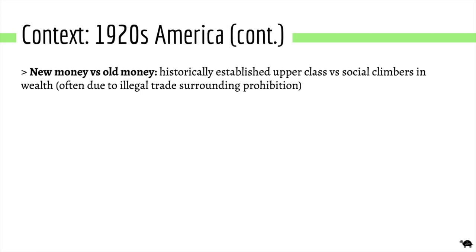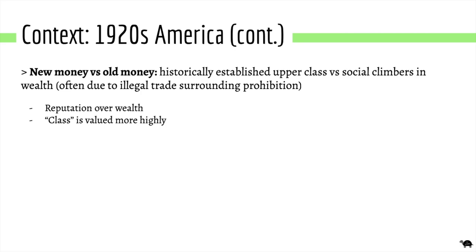There was also this concept of new money and old money, in which class was compared within the richest people. New money marked those who were formerly of a lower class who gained money rapidly, often illegally. Old money refers to the traditional upper class who often got their money from plantations. Essentially, the key difference is not the amount of money they had but the class the person originated from. In the novel, Fitzgerald repeatedly suggests that money is worthless in comparison to class.